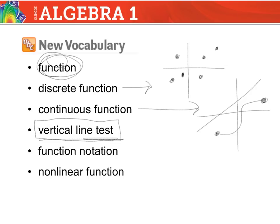Literally, we draw a vertical line through a function and we see how many times or how many points we can hit with that line on that function. The second half today, we're going to do one of my all-time favorite things — function notation. It looks really cool, it sounds really fun, and then we do it and we realize it's really not too complicated.